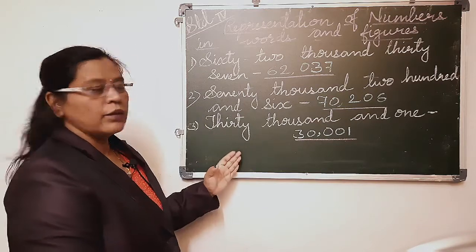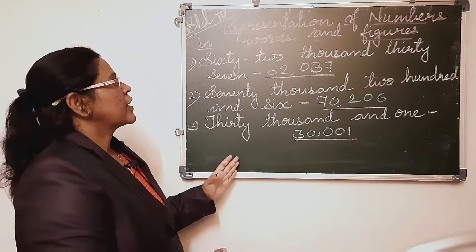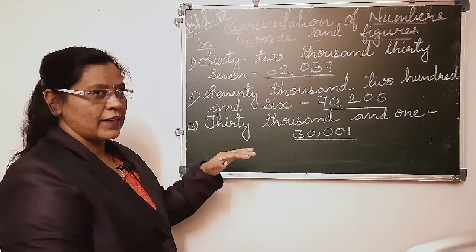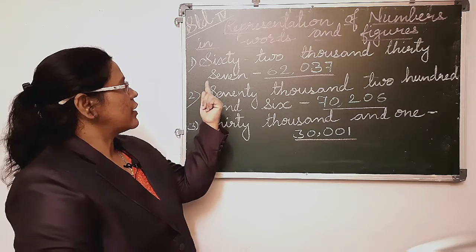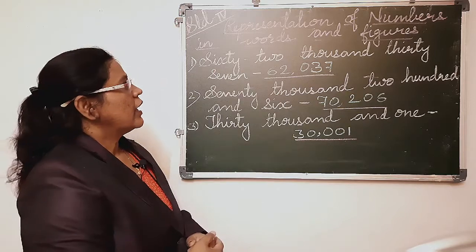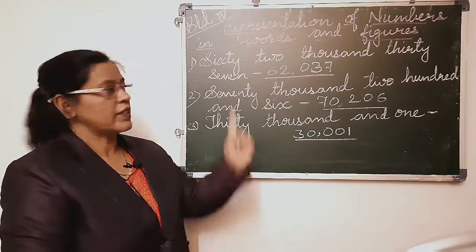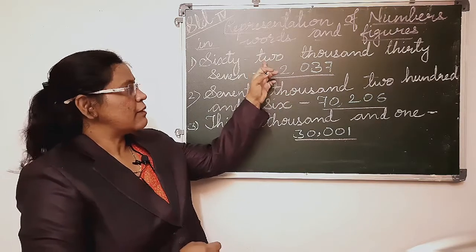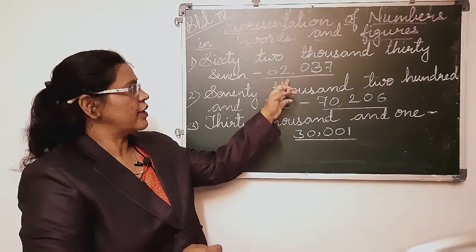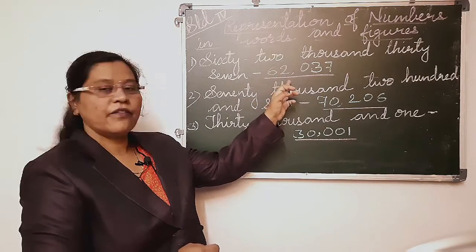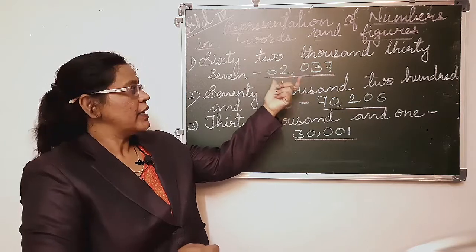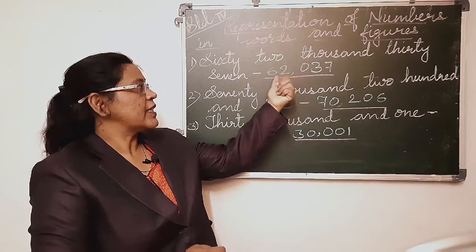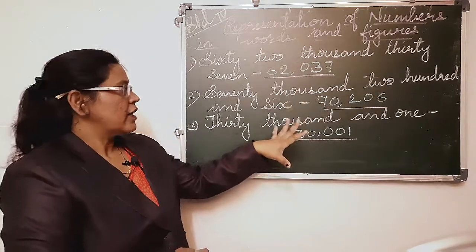So we are going to learn about representation of numbers in words as well as in figures. The numbers in words and in figures are given, and we are going to understand how it forms using the standard form. The first sum says 62,037 — this number which is written in words has also been written in figures using the standard form.